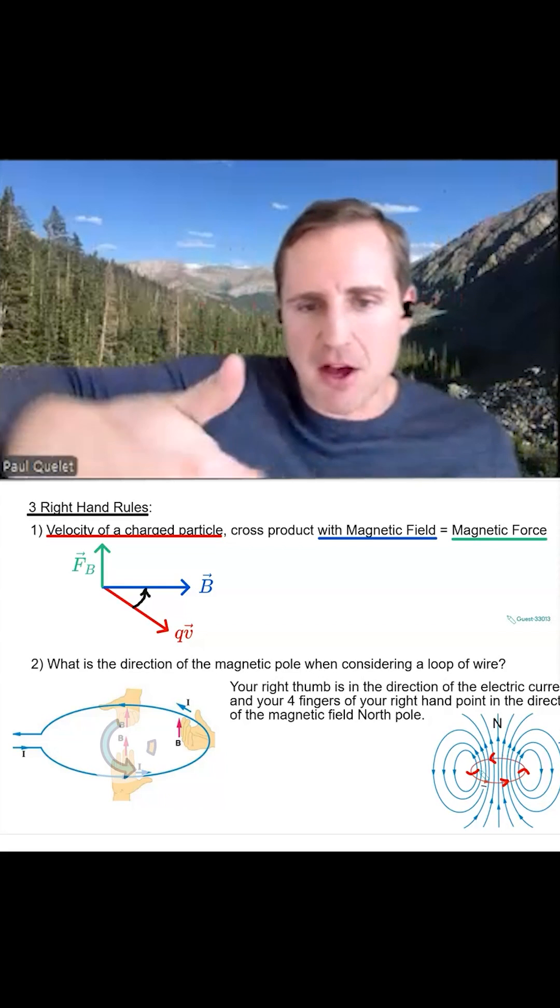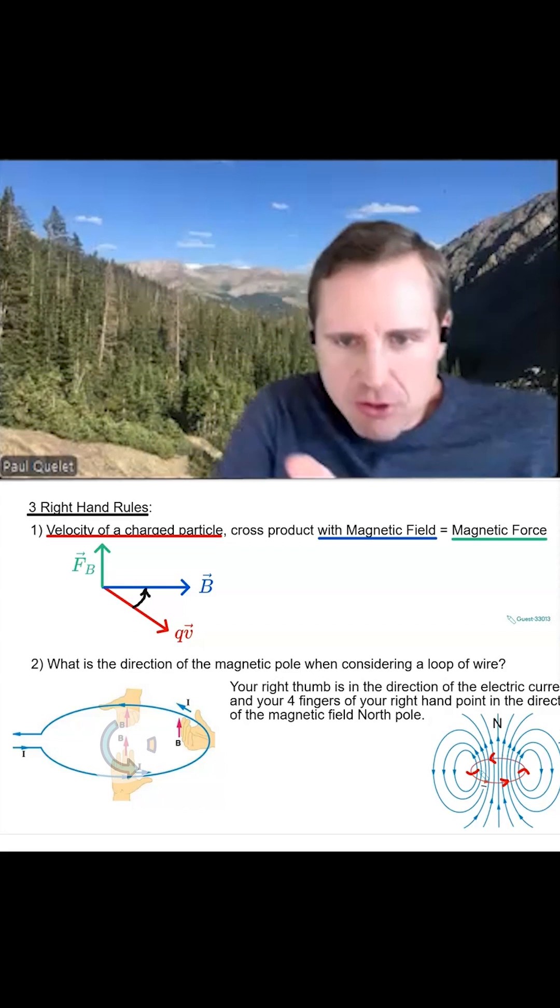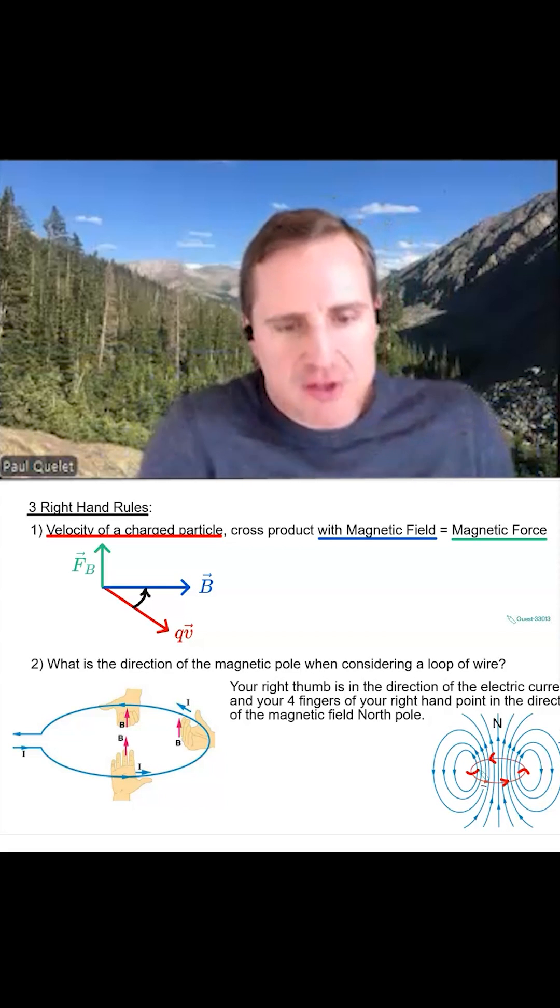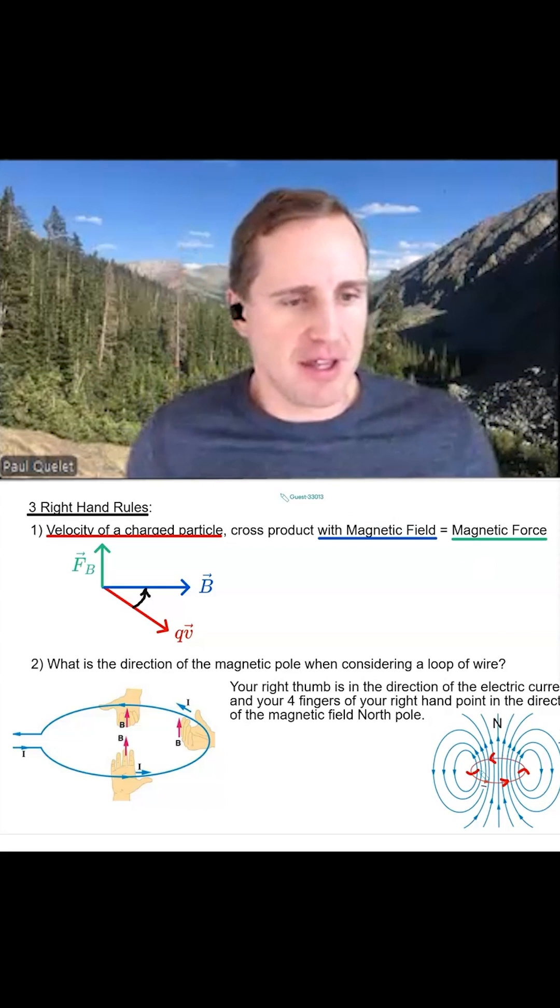What I'm going to do is take my thumb and point it in the direction of the current, and the fingers, which way they go is the way the magnetic field comes through the loop. You see that?